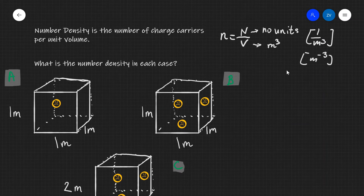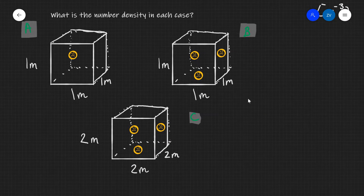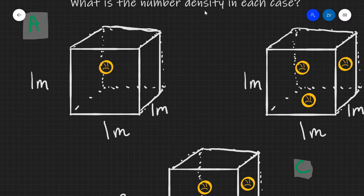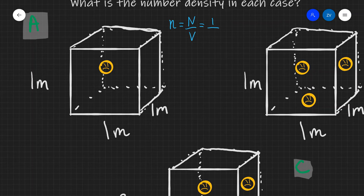Now let's apply this formula to those three cases which I asked you to think about at the beginning of this lesson. Just as a note, each of those smiley faces represents one charge carrier — in most cases this would be an electron, but it could be some positive or negative ions as well. Let's look at the first case. The number density equals the number of charge carriers divided by the volume. There's just one charge carrier in a volume of one cubic meter, so the number density n_a is just 1 m to the power of minus three.